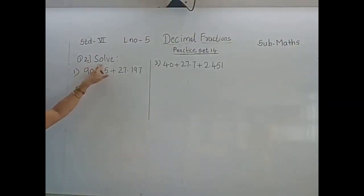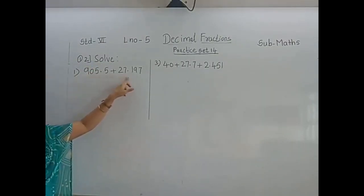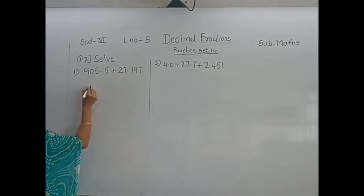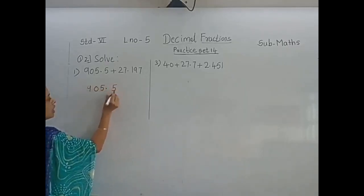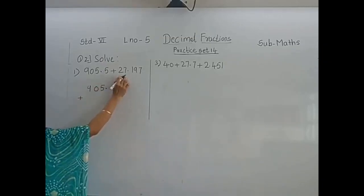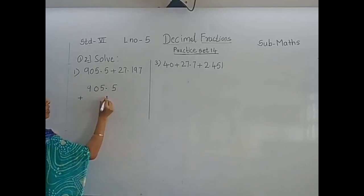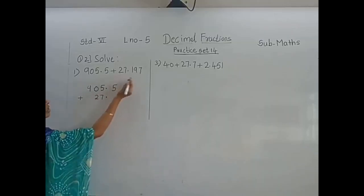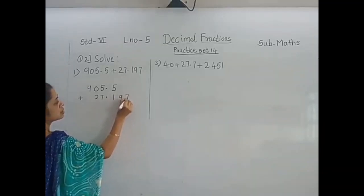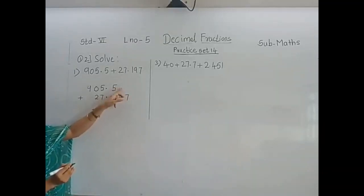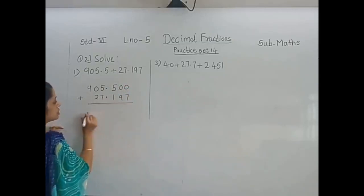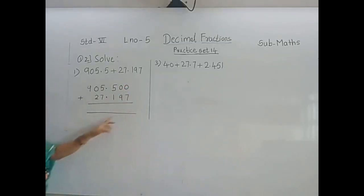Now this is question number 2. Here we have to add these two numbers: 905.5 plus 27.197. Line up the numbers properly. First write down 905.5. While writing the second number, see that the decimal point will come below the decimal point. Write down the numbers on the left side: 27, and the right side numbers are 197. After 5 they have not given any decimal place, so you have to put zeros. And then do the addition.